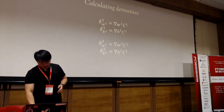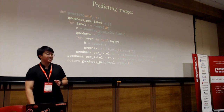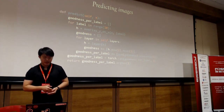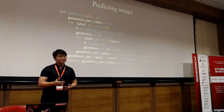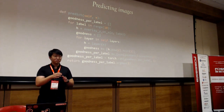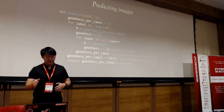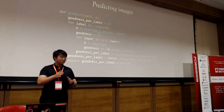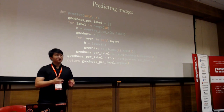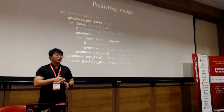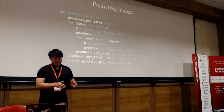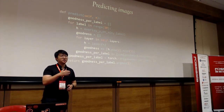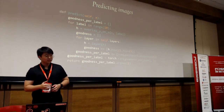Predicting images with Forward-Forward is different from standard backprop. For MNIST — digits zero to nine — you cycle through all 10 labels, merging each label with the image you want to predict. You get a goodness value for each label-image pair, and your prediction is simply the label with the maximum goodness value.